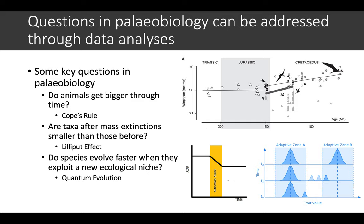Like do animals get bigger through time, such as Cope's rule? Or are taxa after mass extinction smaller than those before, such as the Lilliput effect?